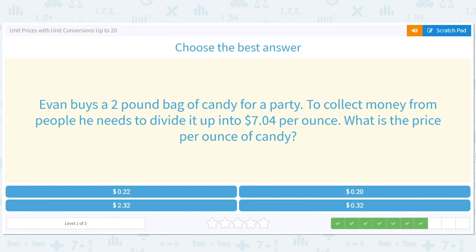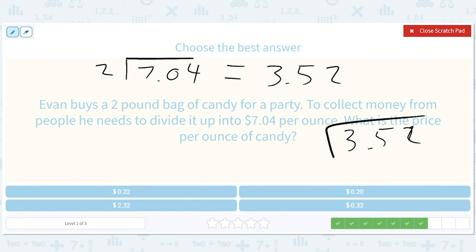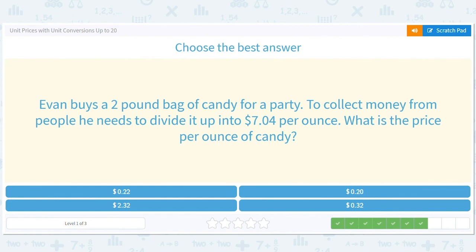Evan buys a two pound bag of candy for a party. To collect money from people he needs to divide it up. So $7.04 divided by two, that's going to be three dollars and fifty two cents. Then he has to divide that by 16 to get price per ounce. We can kind of eyeball this. If it were 20 cents that would be 320, so we need another 32 cents. We need to add two cents so it's going to be 22 cents.